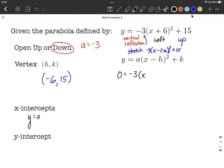So we have negative 3, x plus 6 quantity squared, plus 15. Just put a 0 in on the left-hand side.